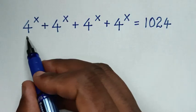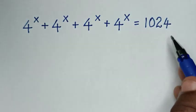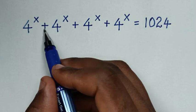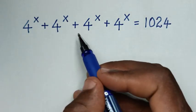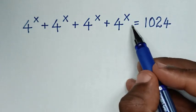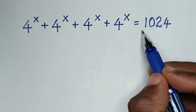Hello, you are welcome to solve this math problem, which is 4^x + 4^x + 4^x + 4^x = 1024.